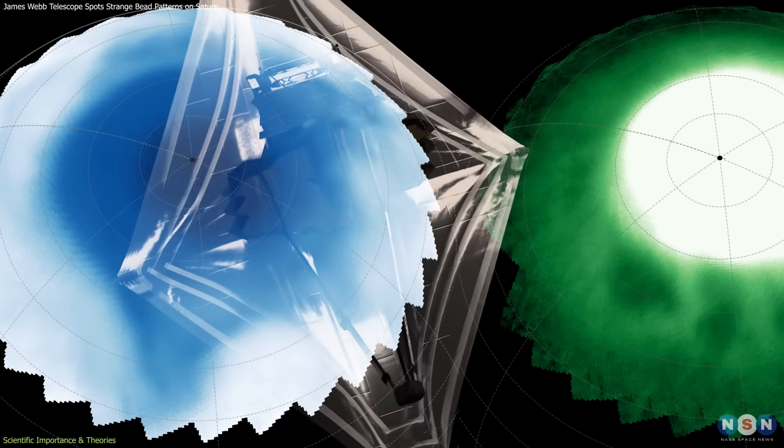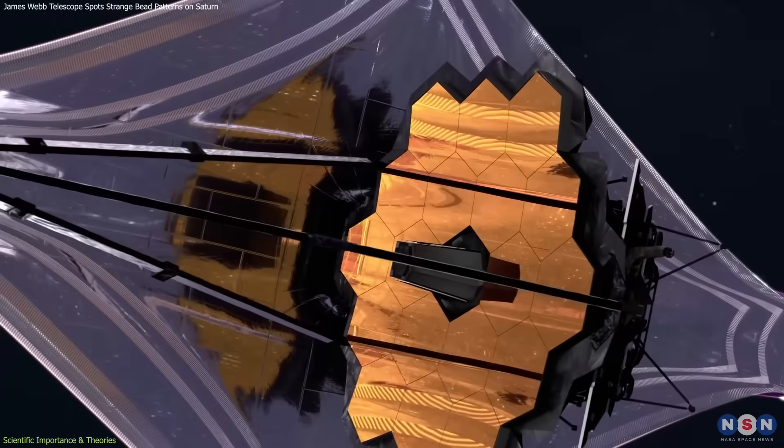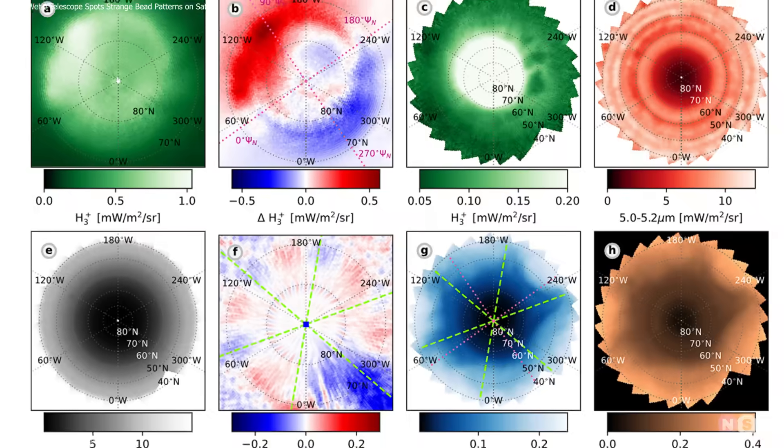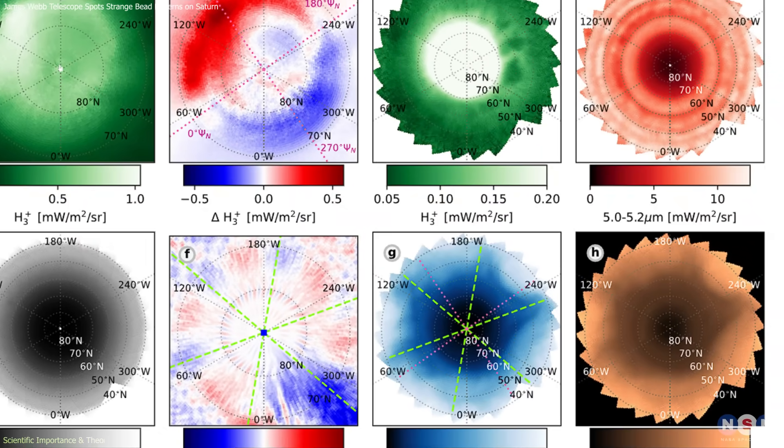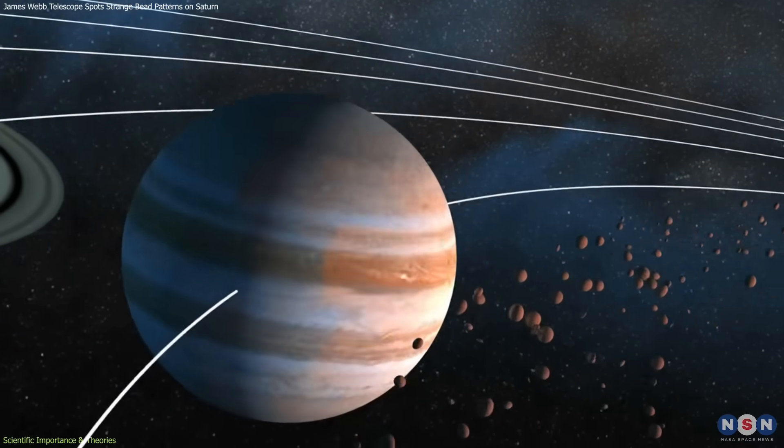By observing both layers at once, Webb provided a multi-level picture of them. This ability to detect subtle features that other telescopes could not is what makes the discovery so significant. It shows that giant planets may hide fine-scale dynamics invisible until now.